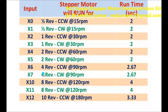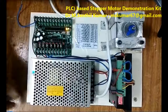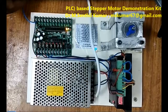X7: four revolutions at 90 RPM. X10: eight revolutions counterclockwise at 120 RPM. X11: eight revolutions clockwise at 120 RPM. X12: ten rotations counterclockwise at 180 RPM. Now we will see the real working of this setup in the video.